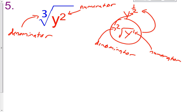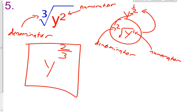So what is the answer for number 5? It is that same base of y raised to the 2 in the numerator, 3 in the denominator, and that is my answer: y raised to the 2 thirds power.